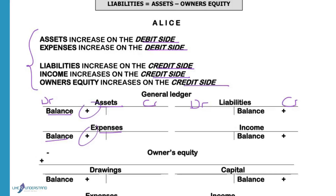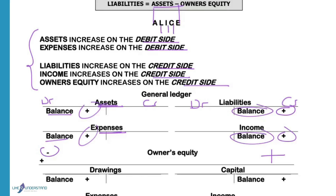The first letter A and the last letter E of ALICE: A is assets, E is expenses — they will increase on the debit side. The letters inside the word — that means liabilities, income, and capital — will increase on the credit side and the balance will always be on the credit side. Owner's equity is like capital, and owner's equity decreases on the debit side and increases on the credit side.